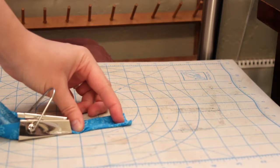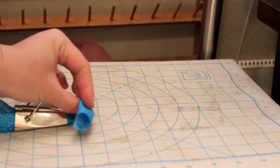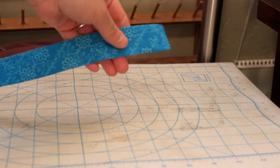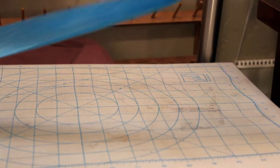At this point you can use a bias tape maker to fold both edges in toward the center and iron. Or you can simply fold it in half and iron. It depends on what you plan on using this for later.